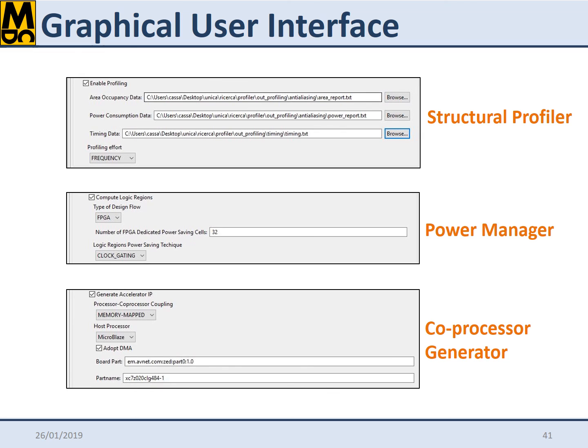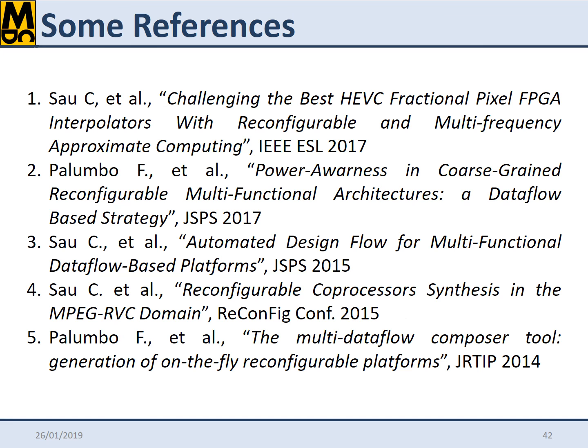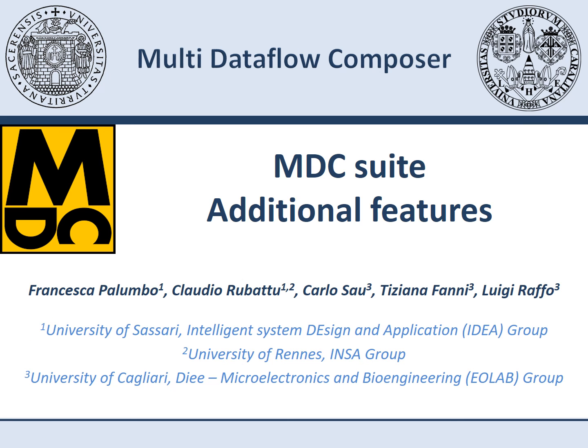For the coprocessor generator, the user shall choose the kind of coupling — memory-mapped or FIFO-based — the host processor — MicroBlaze or ARM — whether or not to use the DMA, and finally the targeted FPGA board. To learn more about MDC and its applications, some references are provided. This video concludes the presentation of MDC. Step-by-step tutorials will come soon. Thanks for watching.